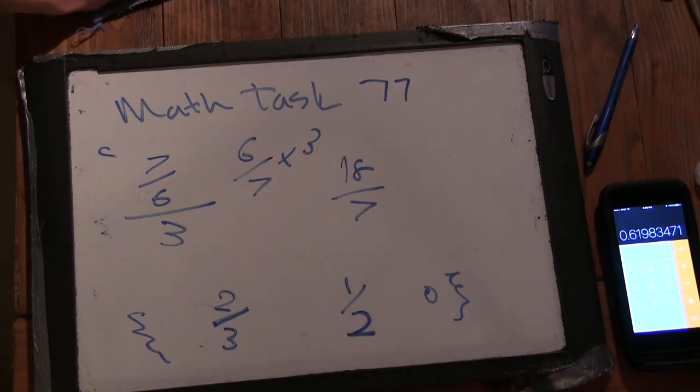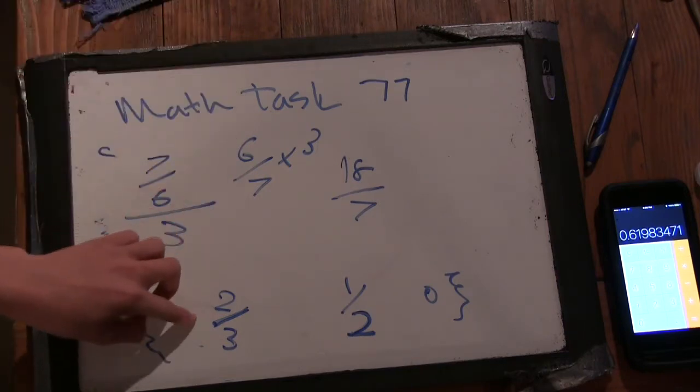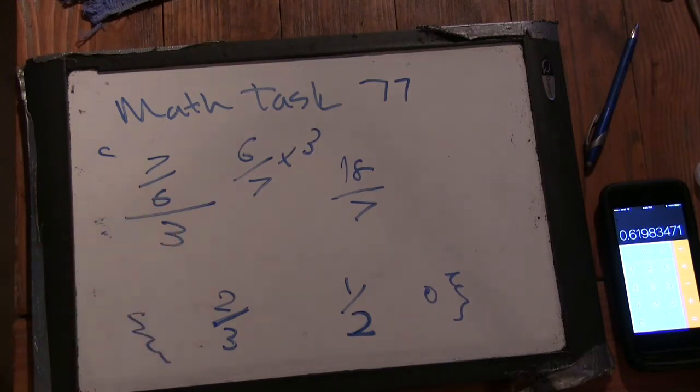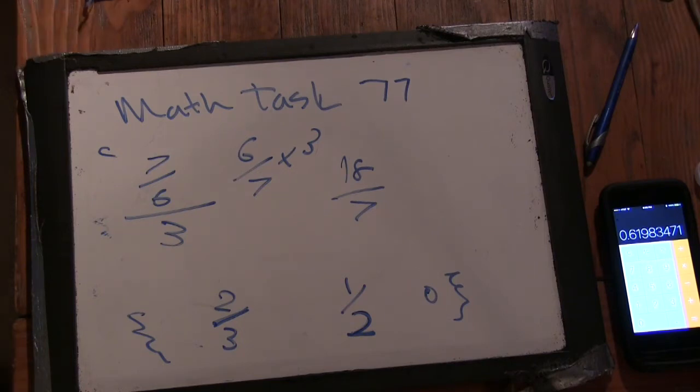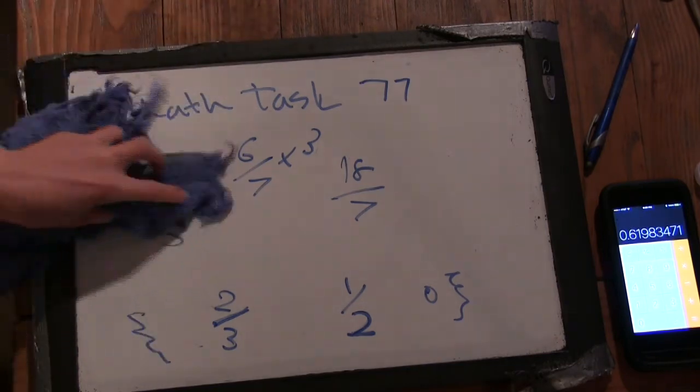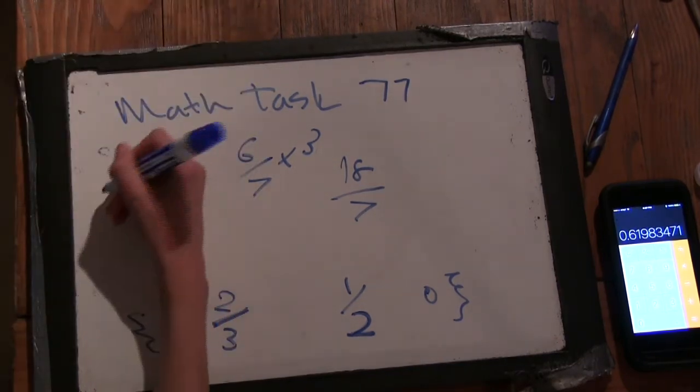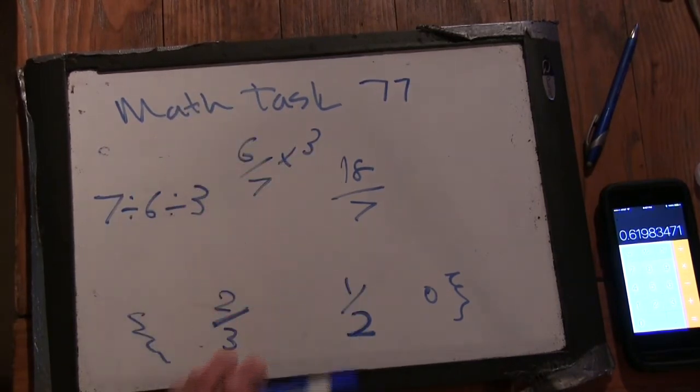Well, it's larger than the largest of the... Yeah. So I must've... So what did I do wrong? 7 divided by 6 divided by 3. So this equals 7 divided by 6 divided by 3.